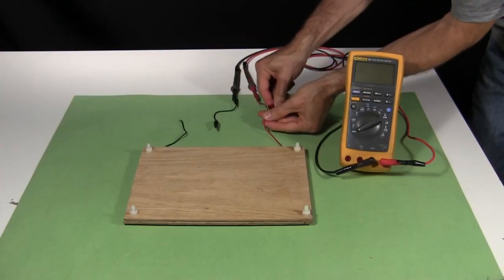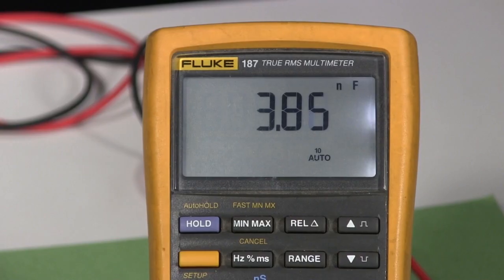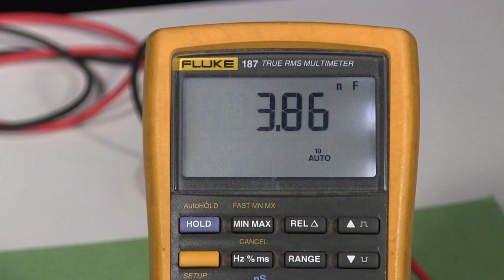Next I get out my meter, and connect it to the capacitor. I put it on the capacitance setting. The capacitance is 3.86 nF. For my Tesla coil I need 4 nF, so it's close enough. I got lucky.